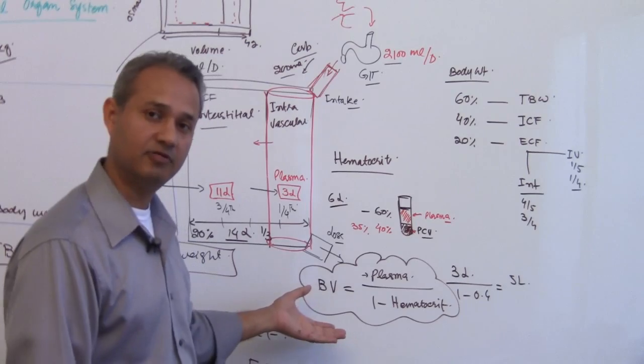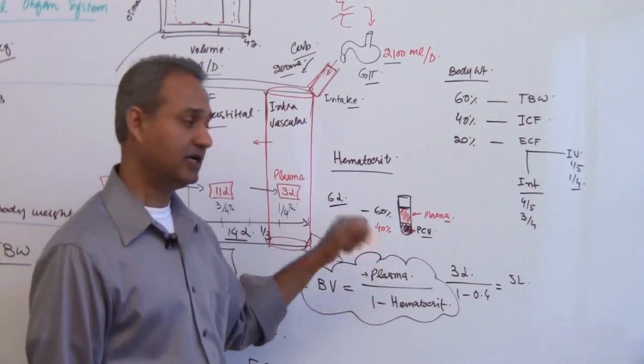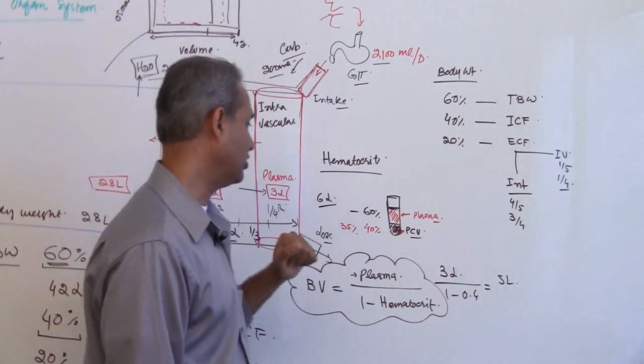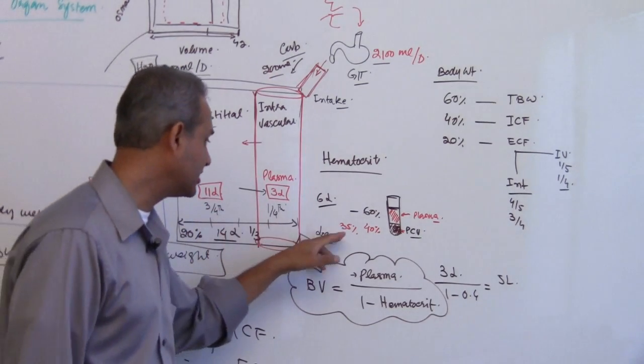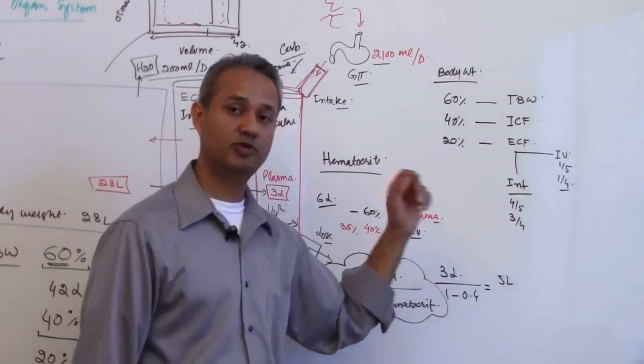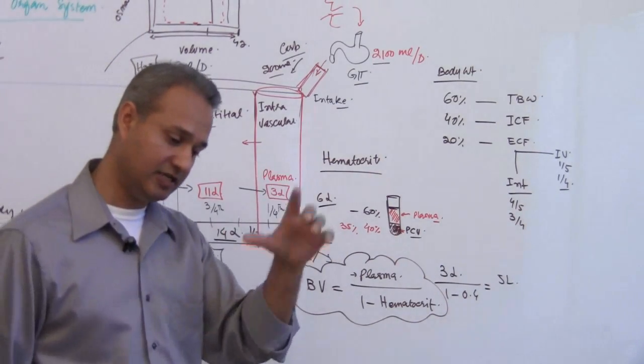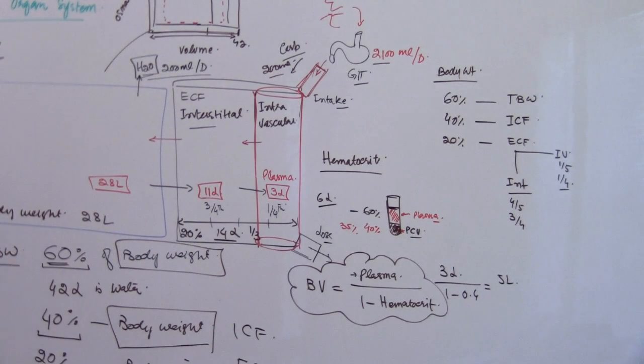Do some exercises around this. If a person has 3 liters plasma and his hematocrit is 40%, then how much is the blood volume? If a person has 6 liter plasma and his hematocrit is 35%, use 1 minus 0.35 and that would be the blood volume. Do this exercise, maybe take a page and tag it.